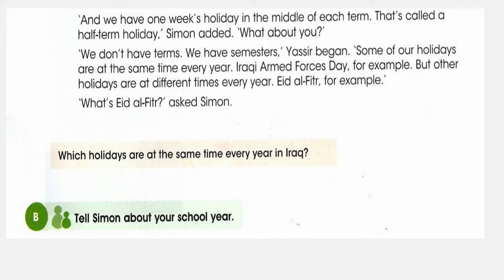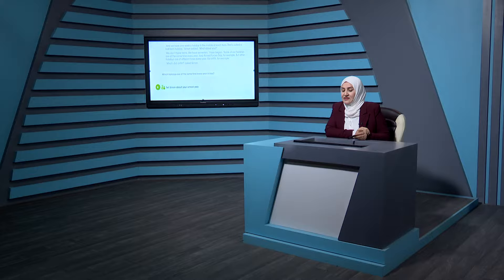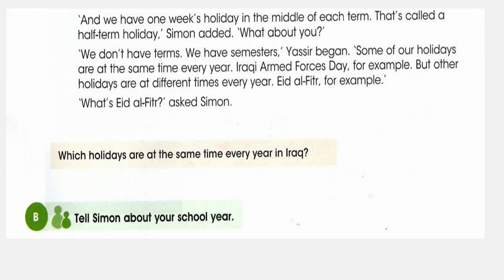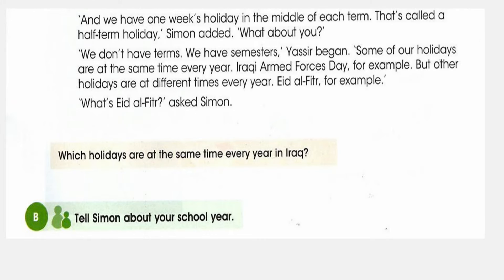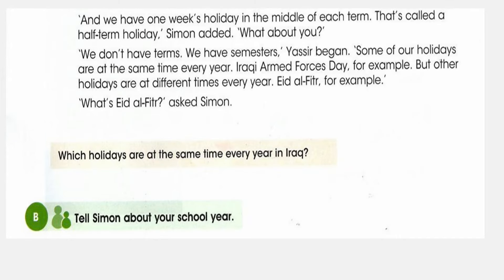Simon asked Yasr, 'What about you in Iraq?' 'We don't have terms — we don't have study terms. We have semesters' — a semester is half of the school year. 'Some of our holidays are at the same time every year' — some of our holidays are fixed, the same time every year. Iraqi Armed Forces Day, for example. But other holidays are at different times every year — especially holidays based on the Islamic Hijri calendar. For example, Eid Al-Fitr changes from year to year.